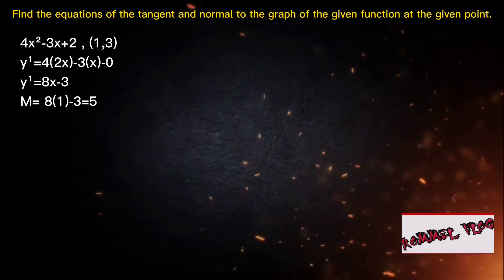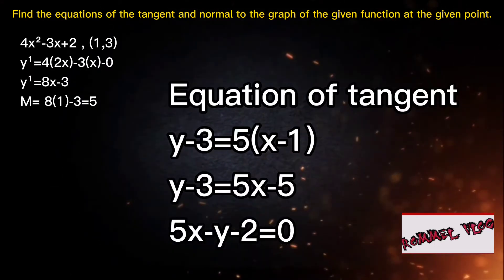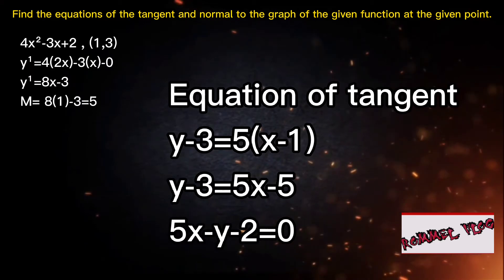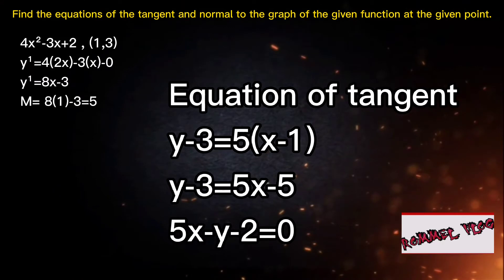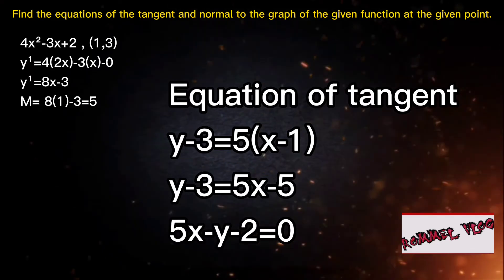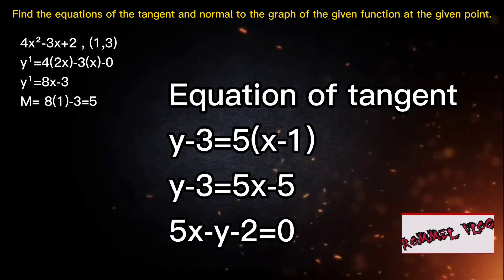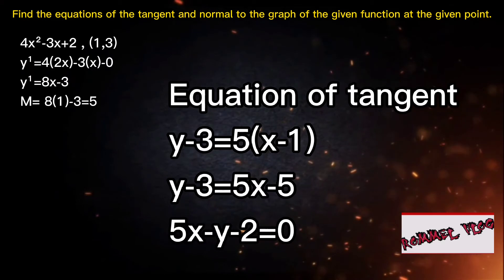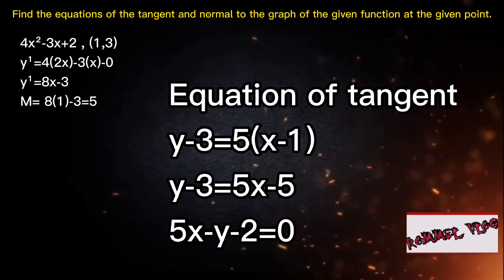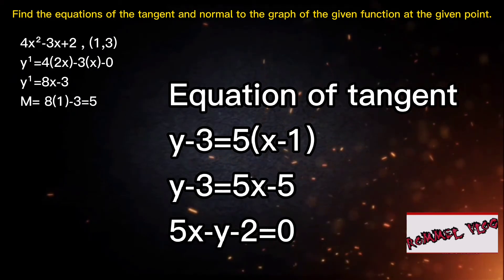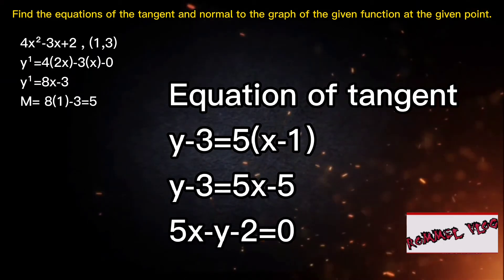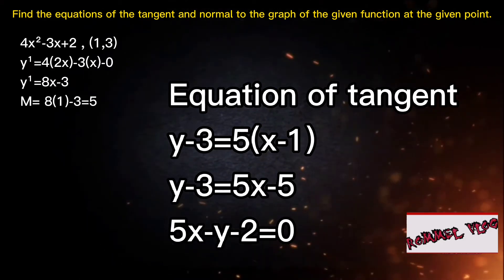Now we find the equation of the tangent. The equation is y minus 3 equals 5 times the quantity of x minus 1. Here, 3 is the value of y and 5 is our slope. Expanding: y minus 3 equals 5x minus 5. So the equation of the tangent is 5x minus y minus 2 equals 0.